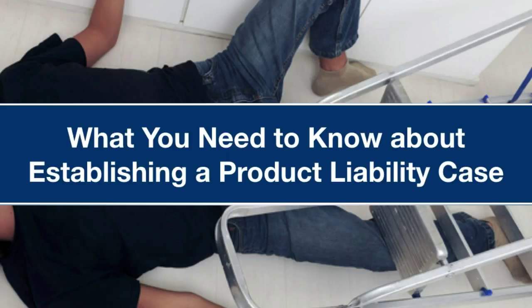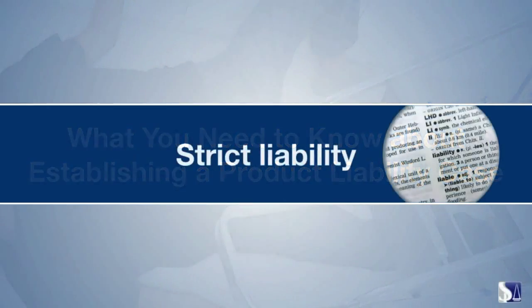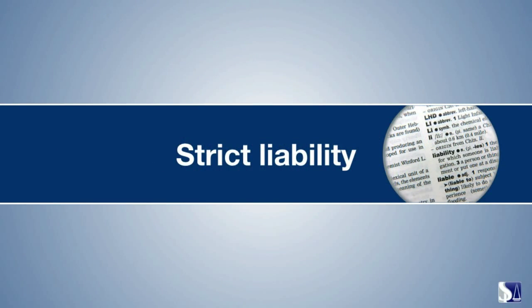The only evidence needed is proof of injury and proof of the product's defect. This is known as strict liability. Once the injury is documented and the defect established, the victim has met their burden of proof. The burden then shifts to the manufacturer to prove the product wasn't defective.